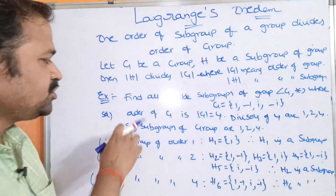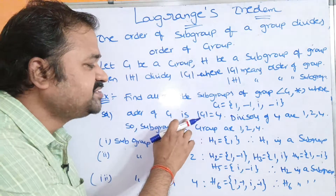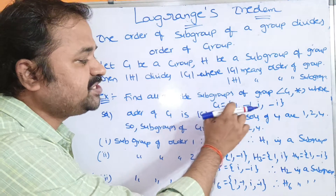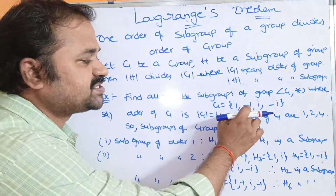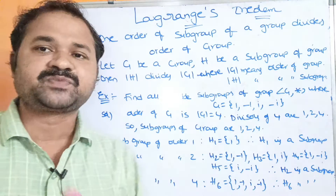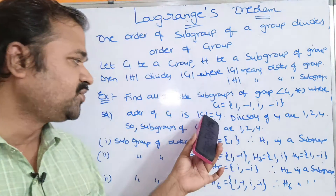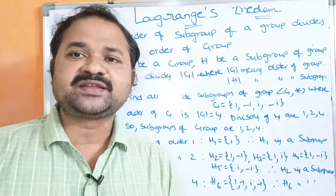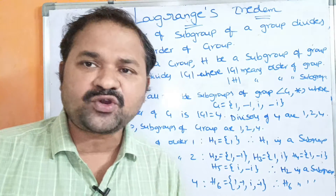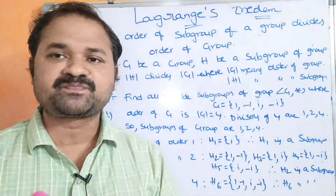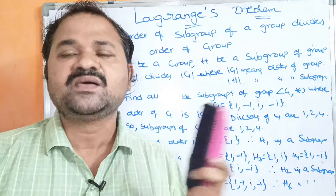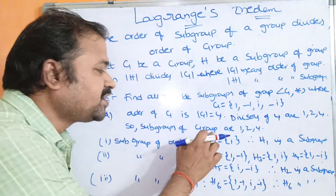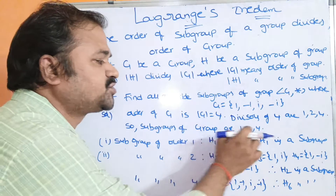The order of G, mod G, equals the number of elements in G, which is 4 — that is, 1, -1, i, -i. So the order of G is 4. The divisors of 4 are 1, 2, and 4, so subgroups may have order 1, 2, or 4.